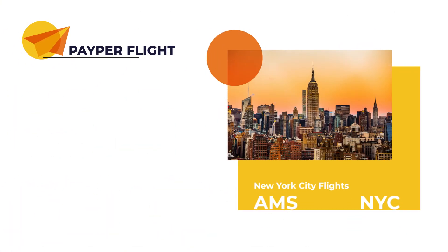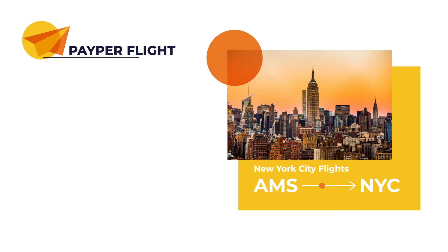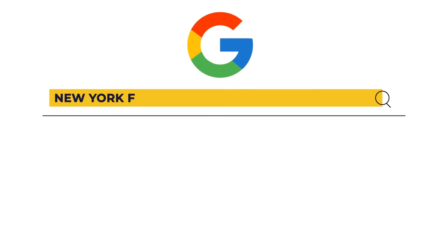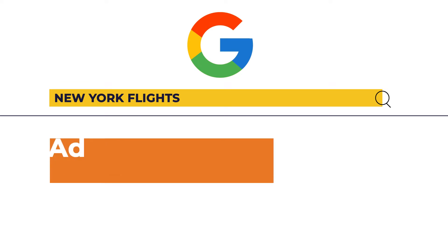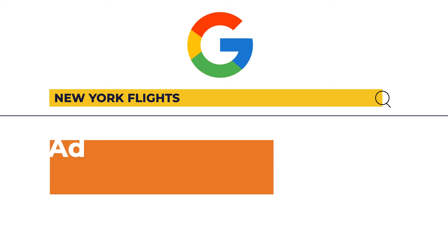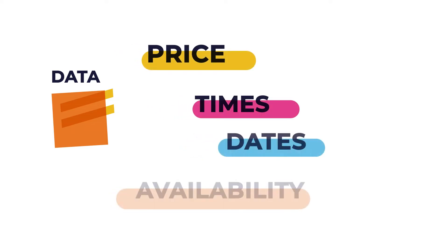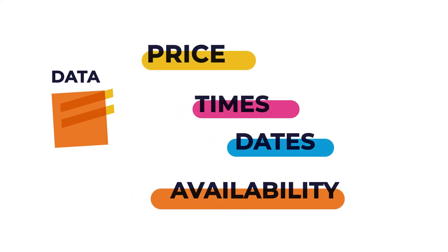Let's think about a travel agency. This agency is offering a flight to New York and wants to advertise on Google. So as soon as someone types in something like 'New York flights' in Google, they want their advertisement to be displayed. This advertisement does not just appear there, but has to be created based on the flight's data — for example, the price, times, dates, and the number of tickets left.